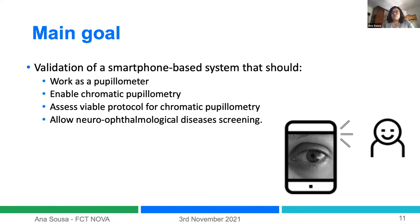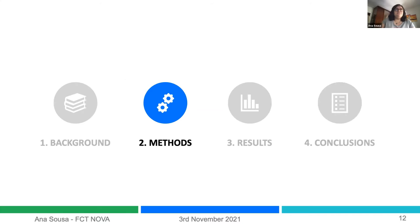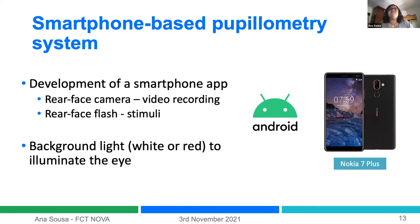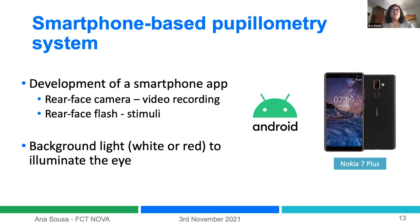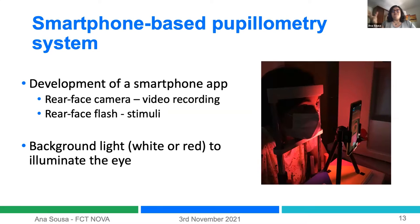The goal here is to prove and validate a smartphone-based system that could work as a pupillometer — one that enables a viable protocol for chromatic pupillometry and ultimately allows neuro-ophthalmological disease screening. We are developing a smartphone app using Android, using the rear-facing camera for video recording and the rear flash to deliver stimuli at automated intervals. We also use background lights in different colors — white and red — to illuminate the eye so we can detect the pupil in each video frame.